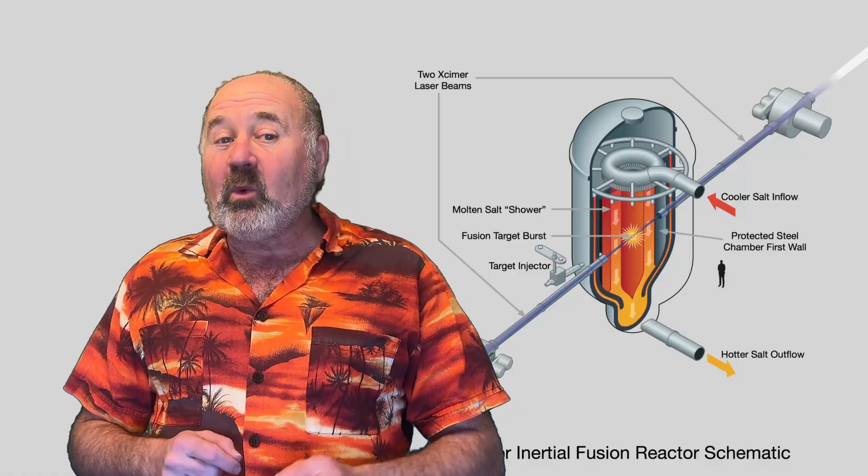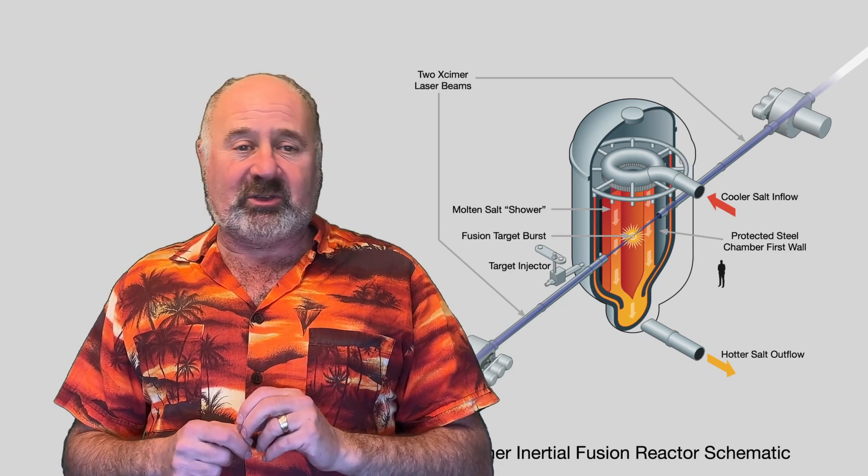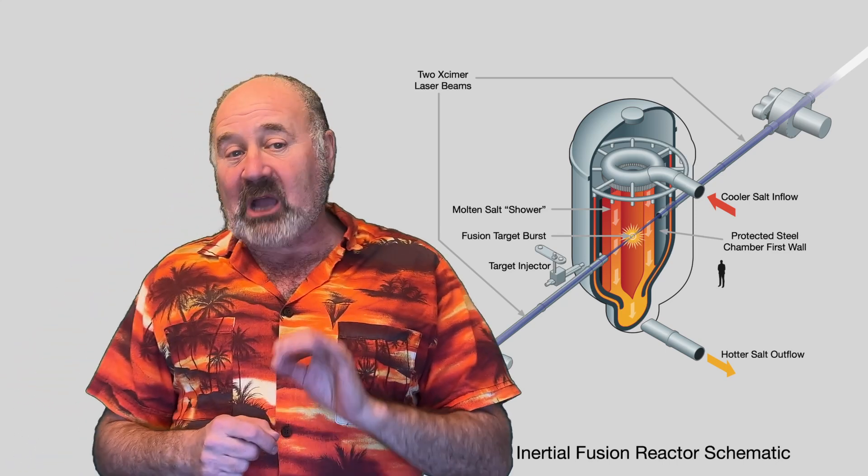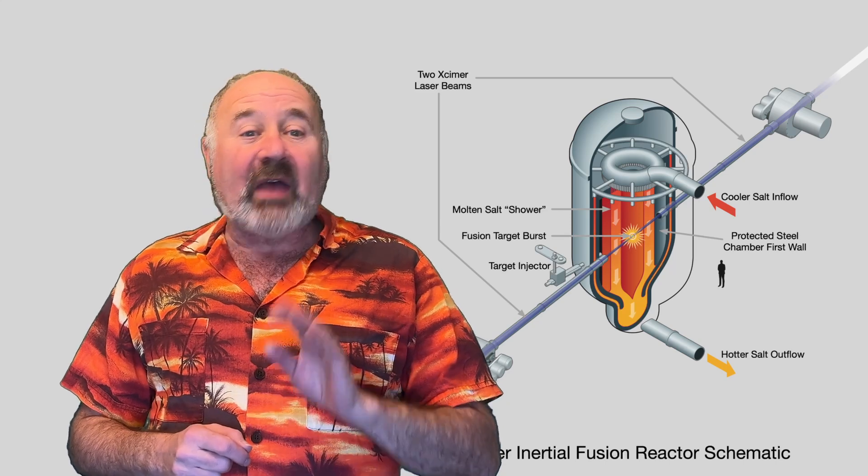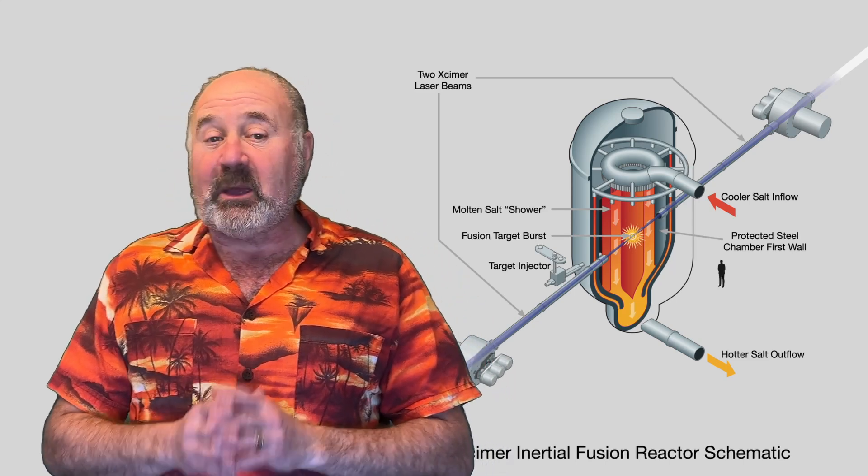Xcimer plans to hit the target with about 12 megajoules across only 2 lasers. So the energy per laser is about 1,000 times higher for Xcimer. And the cost will just be a fraction of what the Department of Energy spent on NIF.